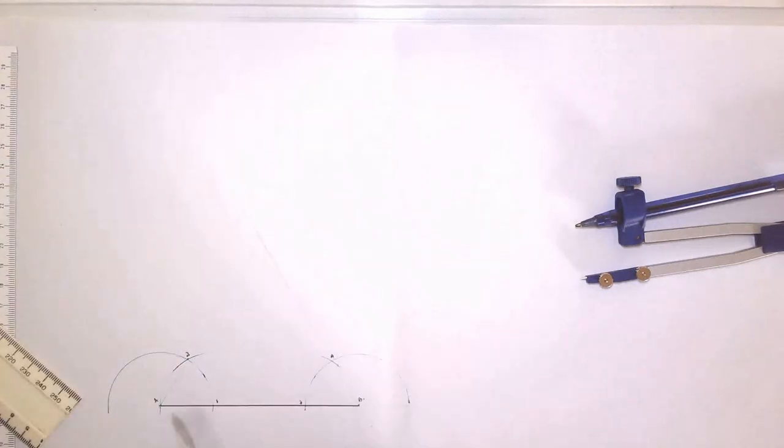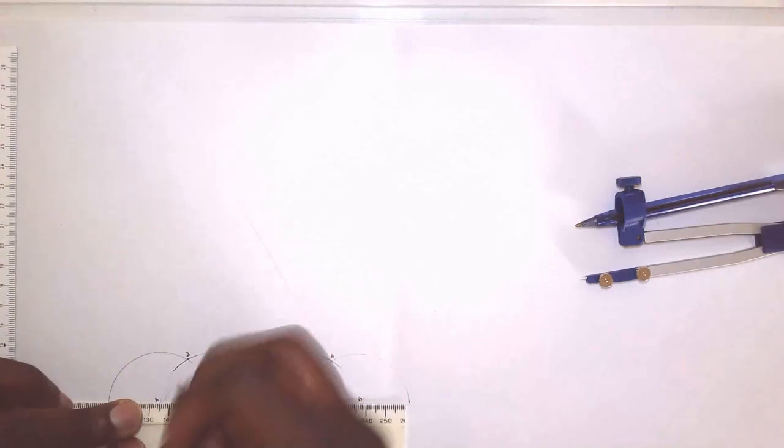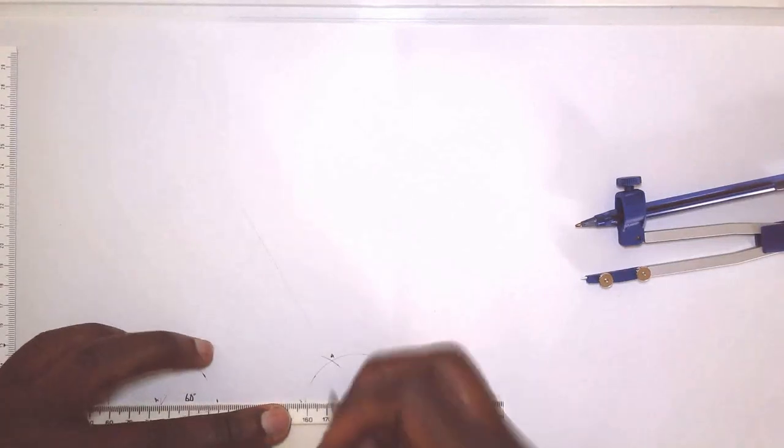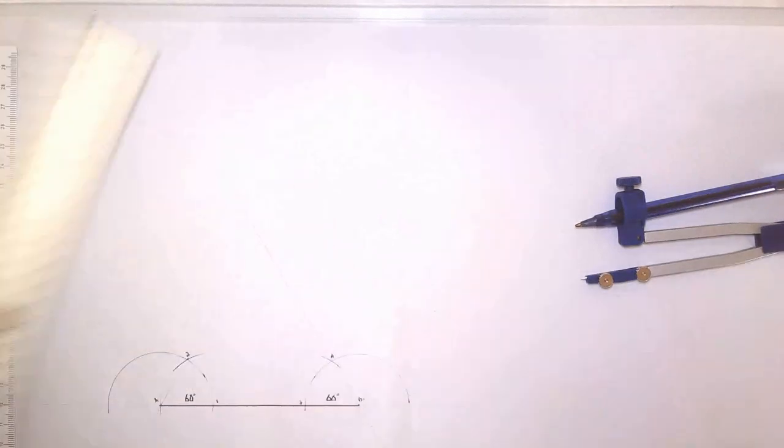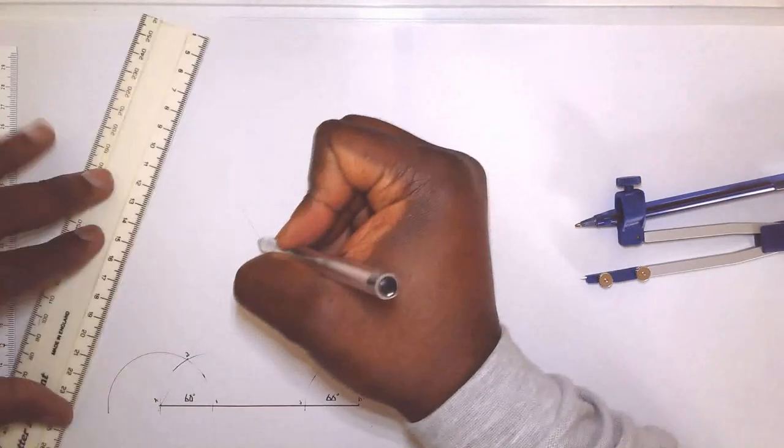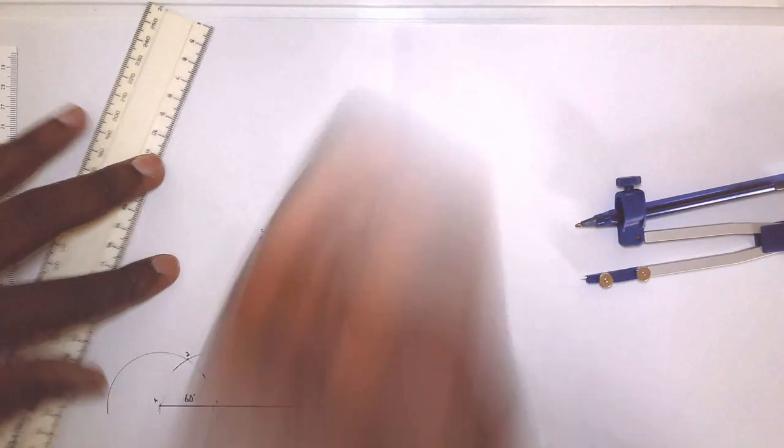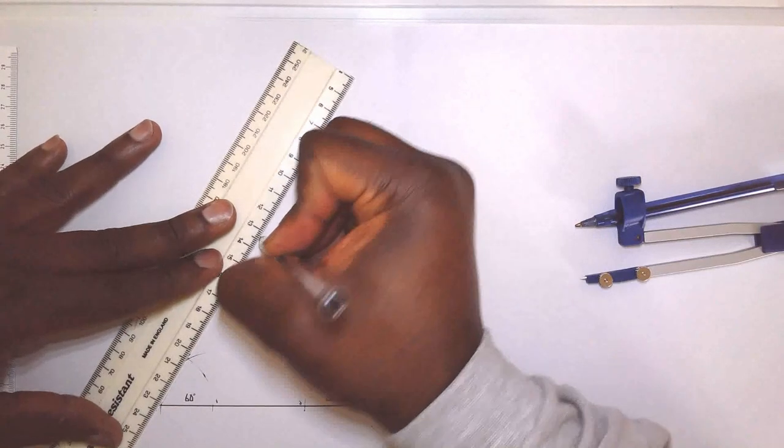This concept basically shows us how to construct a 60-degree angle. This angle is 60 degrees and that angle is 60 degrees. The two rays intersect at point C, and then I'm going to use outlines to firm out the outcome.